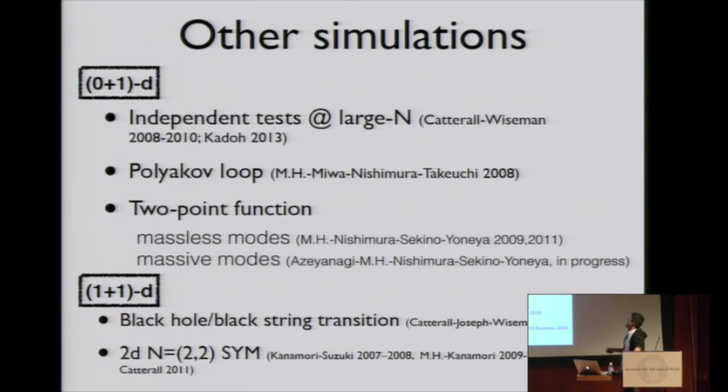We can also calculate other quantities like a two-point function. We can do many things. In 1 plus 1 dimension, Catterall, Joseph, and Wiseman studied thermodynamics at finite temperature. In that case, as pointed out by many people, probably including our chairman, black hole black string transition can be captured by this theory. They claim that they observed that transition from a gauge theory.